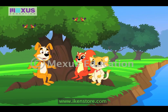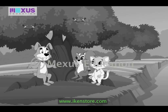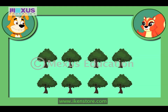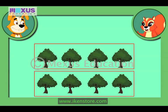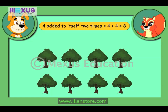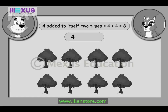Now let's see how a number is multiplied a number of times to another number. Amber, can you tell me how many oak trees are there around us? Use the multiplication as repeated addition concept I taught you earlier. Of course, Buster. There are two groups of 4 trees each, so 4 is added to itself 2 times, and the answer is 8. Or it is 4 multiplied by 2, which is equal to 8. So there are 8 oak trees.